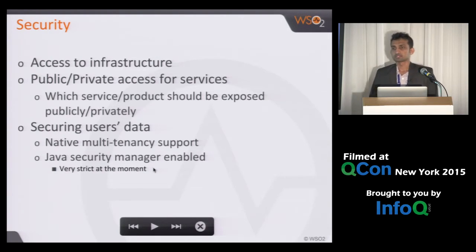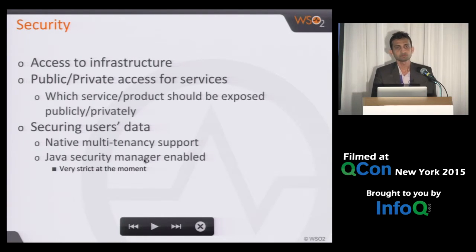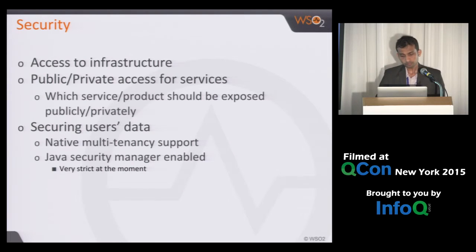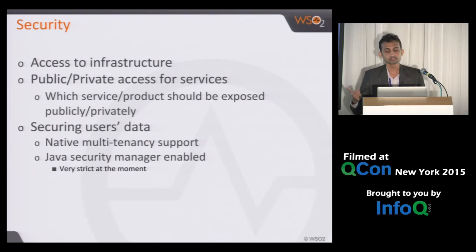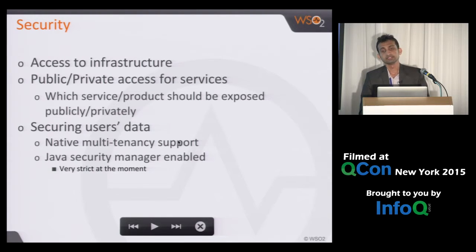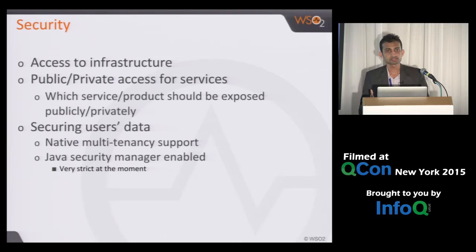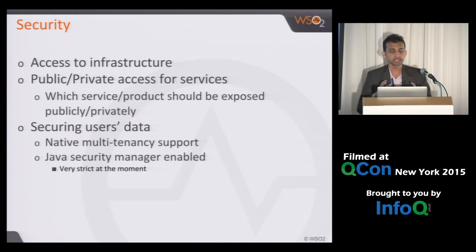The security policy is very strict, which sometimes causes troubles for us and users. For example, someone could deploy an application that reads files from the file system, so we've restricted that — they also can't create class loaders. The reason is we're sharing the runtime with multiple tenants. We are using Apache Stratos to host these application servers, and we're waiting for the next release of Apache Stratos so we can use Docker technology to provide each tenant their own instance. Then we can start multiple Docker containers in one AWS instance, and each tenant gets their own container, so we can remove these strict security policies.